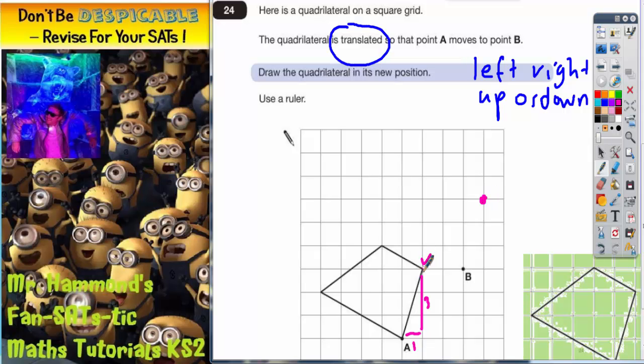To get from that corner to the top corner here, I would go one up and two to the left. So I'd go one up and two to the left. One, two. So the top corner would have to be there. So that's the top corner dealt with.